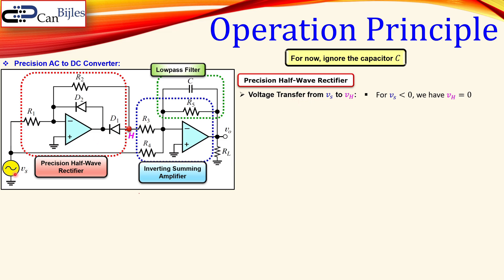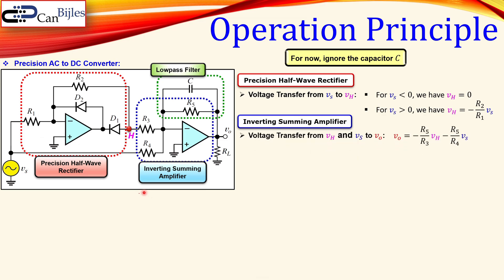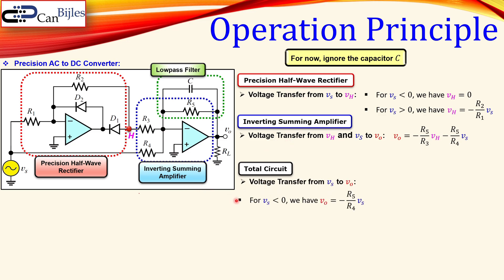If the input is less than zero — negative — then we have no voltage at the output, so VH equals zero. If Vs is positive, the relationship is given by −(R2/R1) × Vs. The inverting summing amplifier performs the standard summing amplifier expression: −(R5/R3) × VH − (R5/R4) × Vs, with minus signs due to the inverting action.